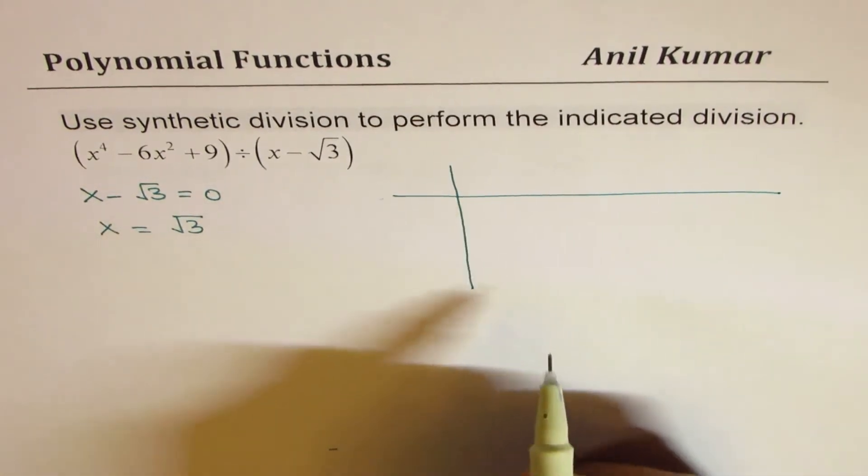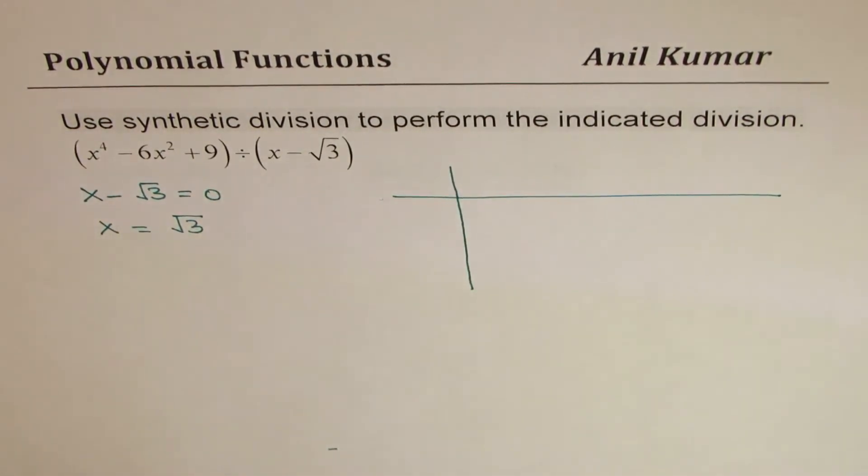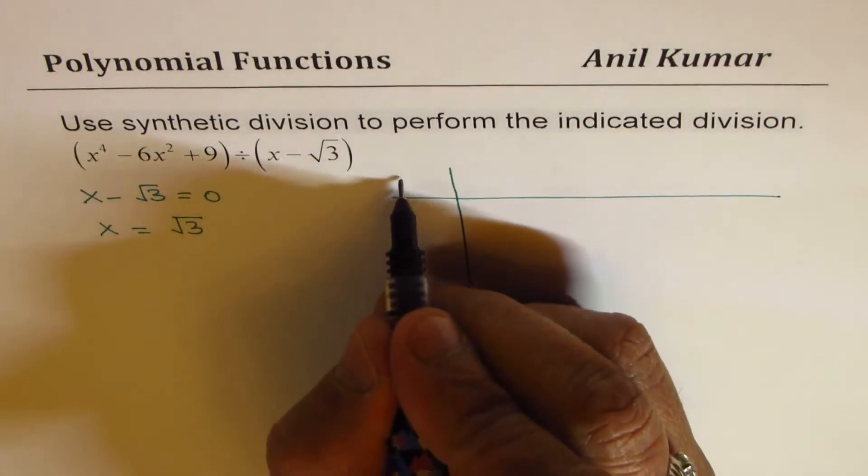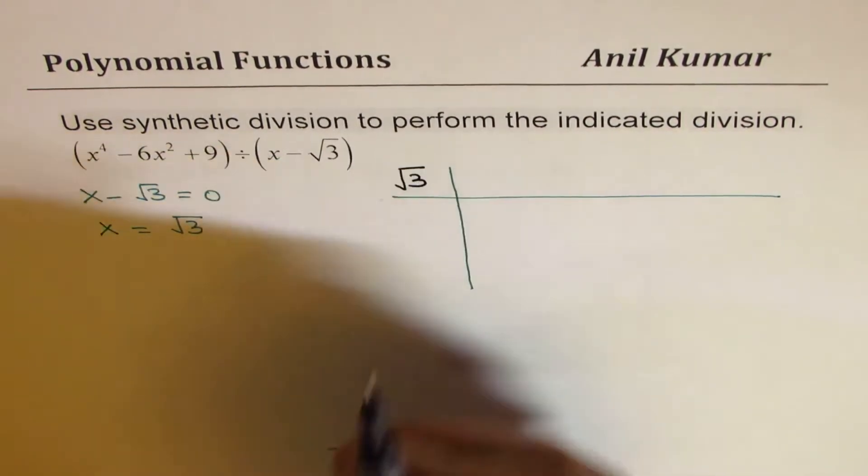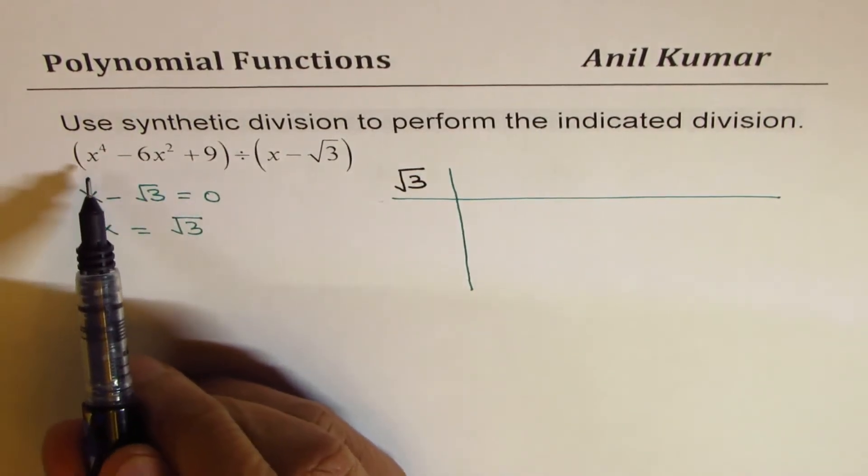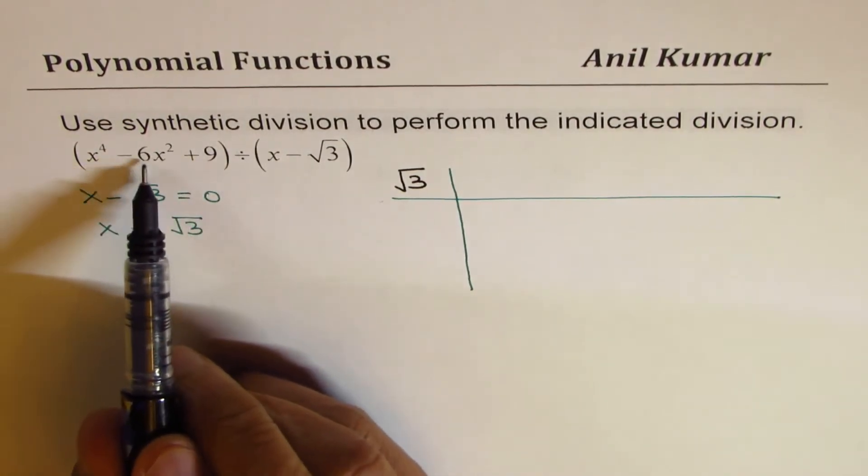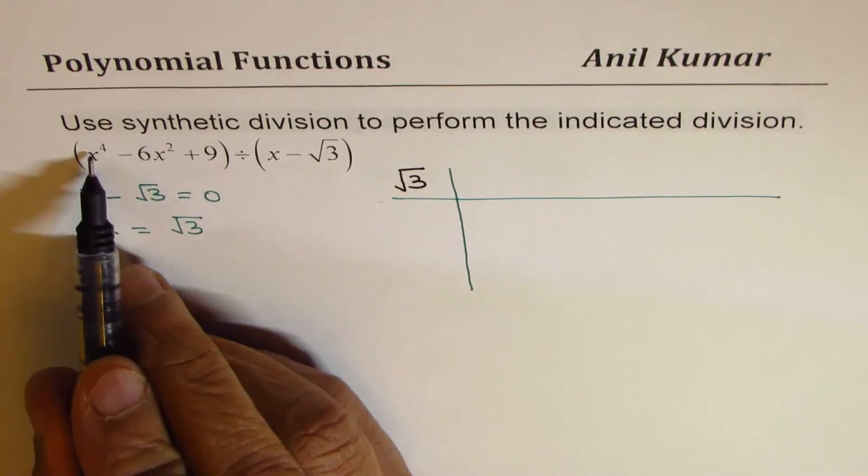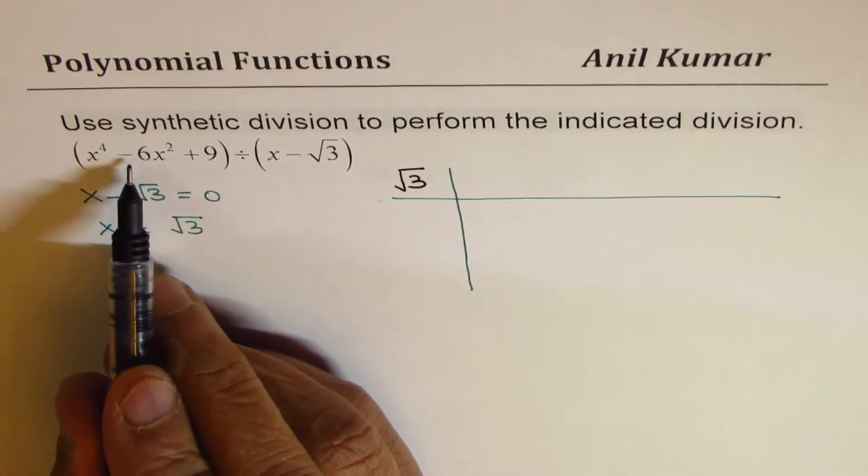We will make a table like this. Write all the terms for the function which is being divided by x minus 3. So here, divisor becomes square root 3. And the terms here should be coefficients of all this. Now as you can see, we are missing few coefficients.